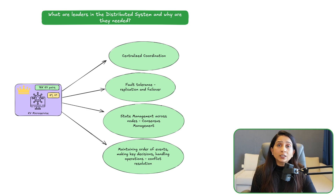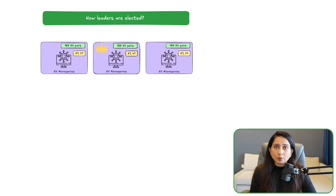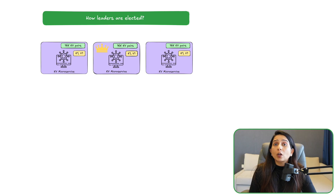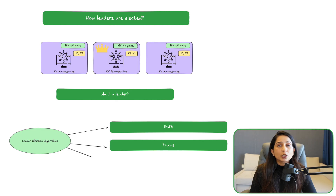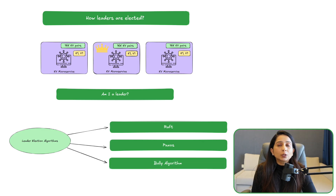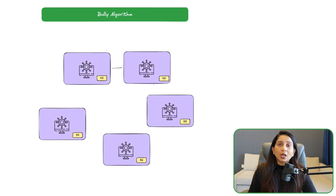Now that we understand what a leader is supposed to do, we need to understand how leaders are elected — whether it's a system of five or seven nodes or a complicated system with thousands of nodes and multiple leaders. We need to understand how the system agrees on selecting a particular leader. You may have heard of various algorithms like Paxos and Raft. The Bully Algorithm is also one of the fundamental algorithms for leader election, and today's video will focus on that one.